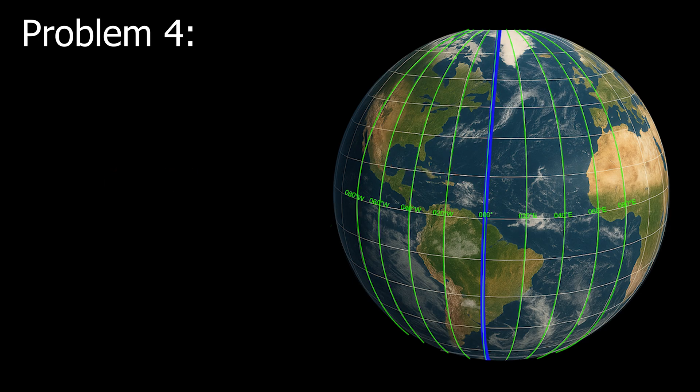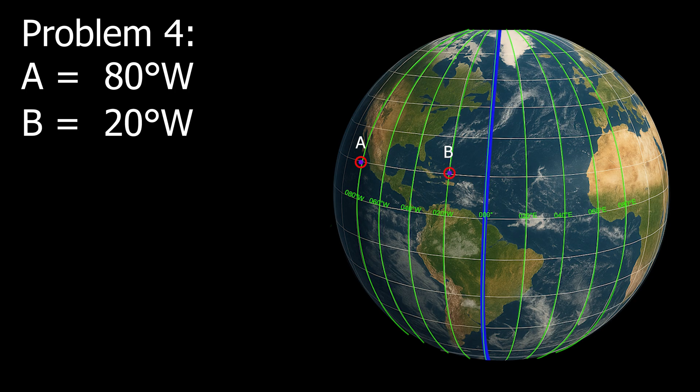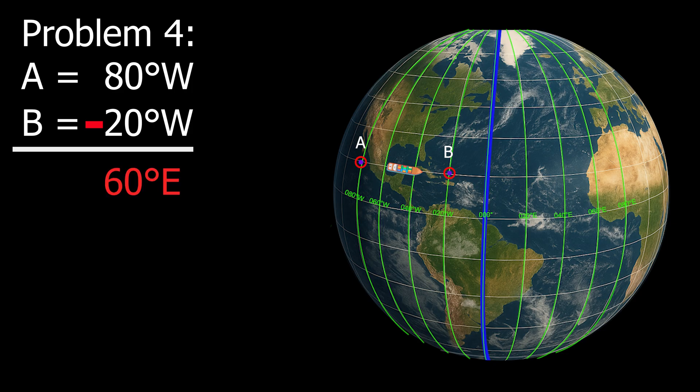Example number four: Point A, 80 degrees west. Point B, 20 degrees west. The difference is 60 degrees. The D-long is 60 degrees east.